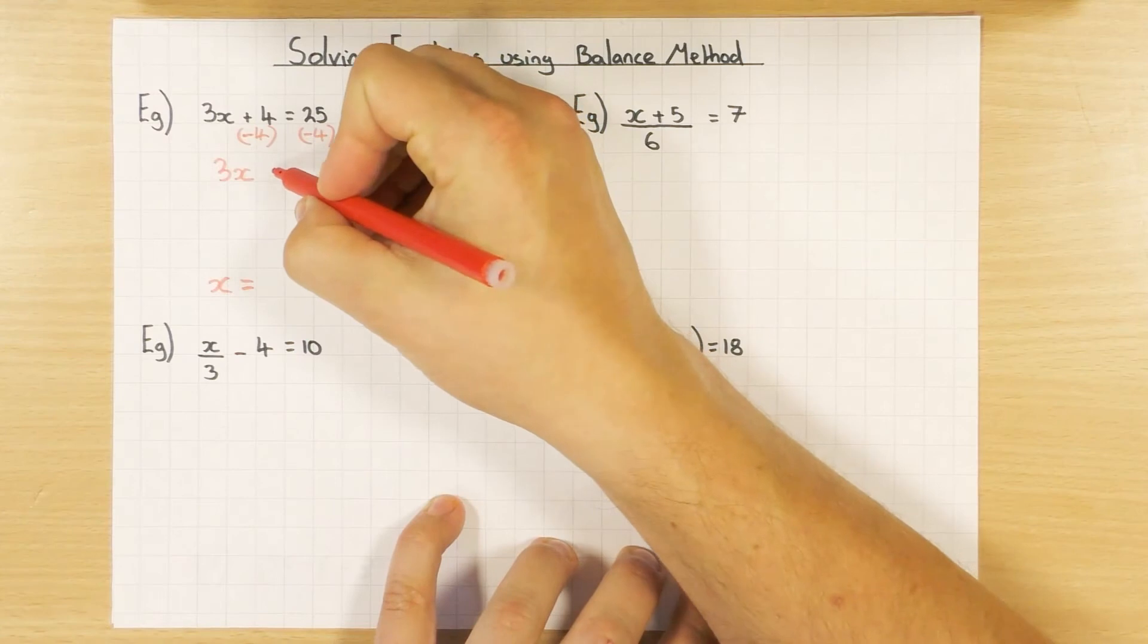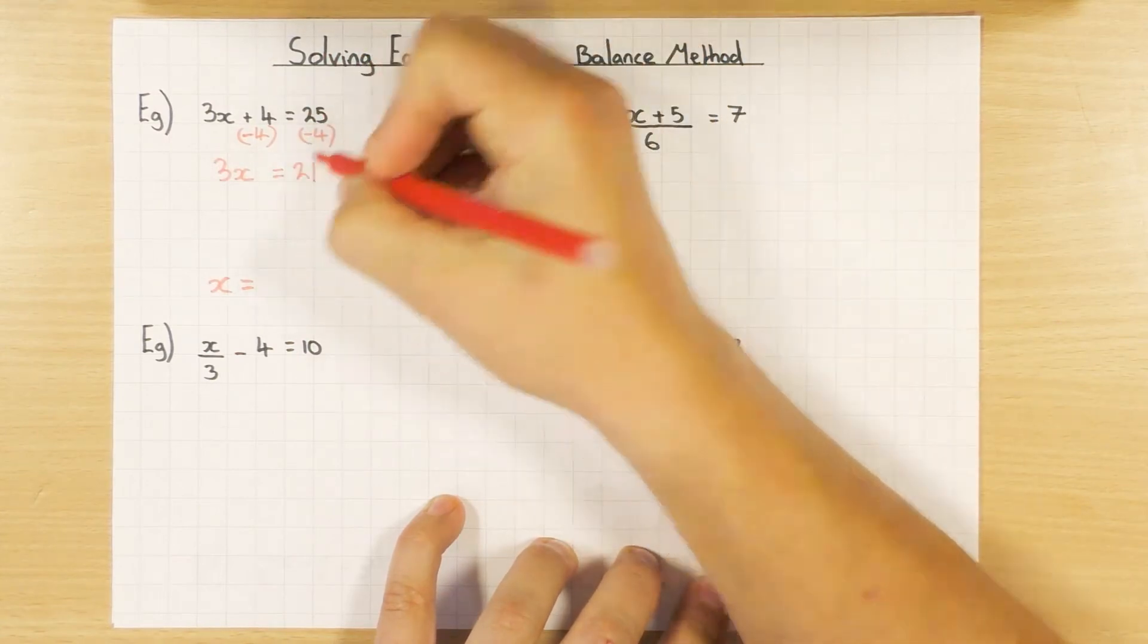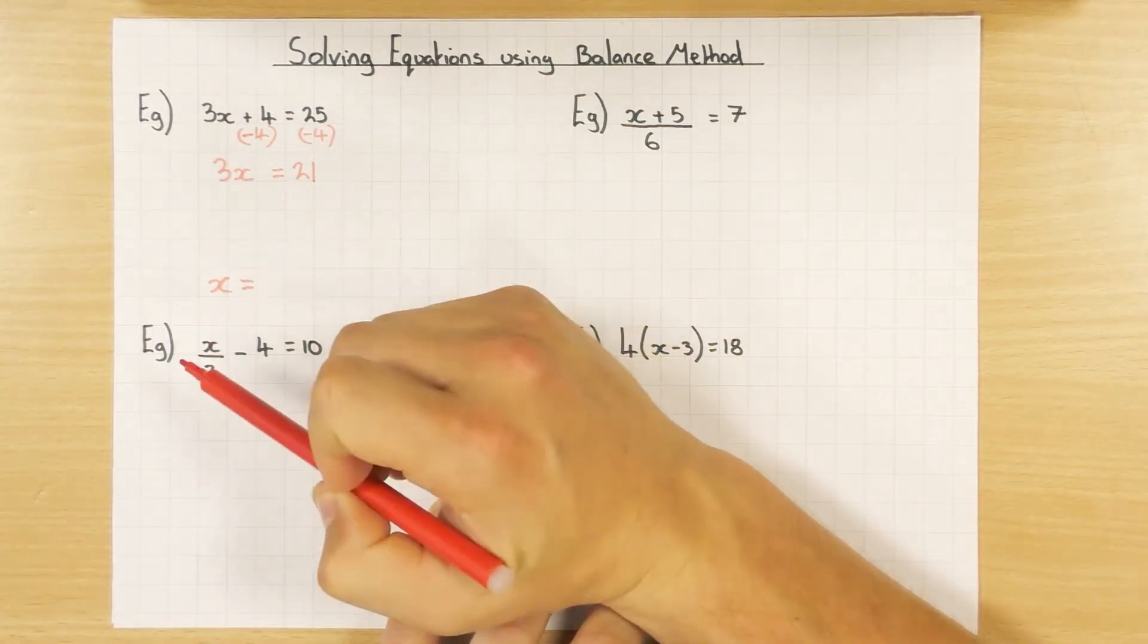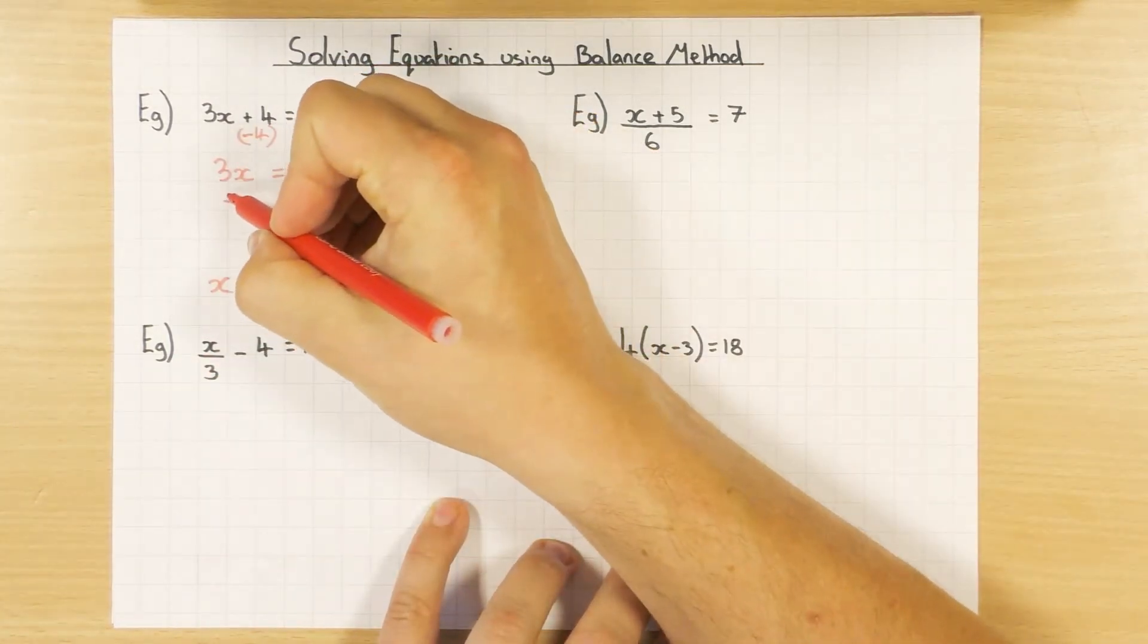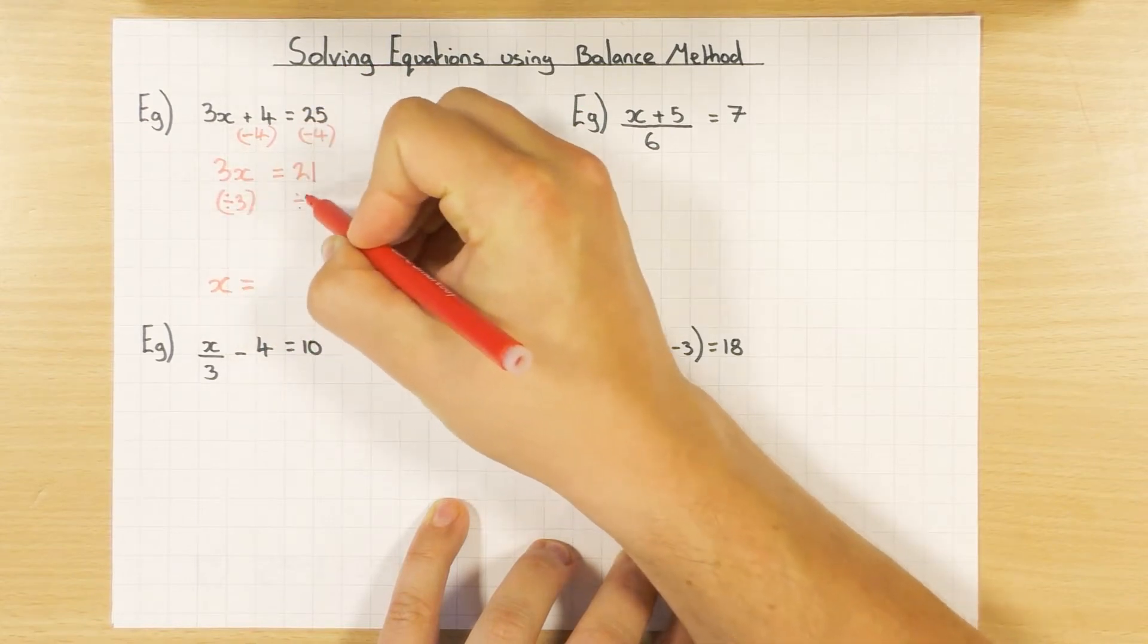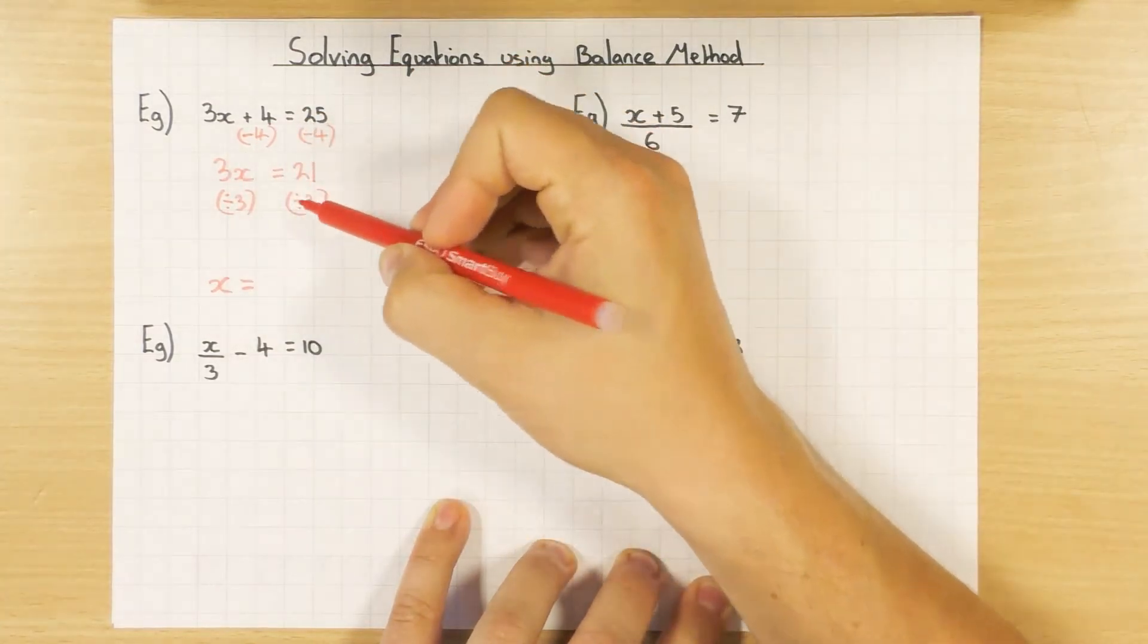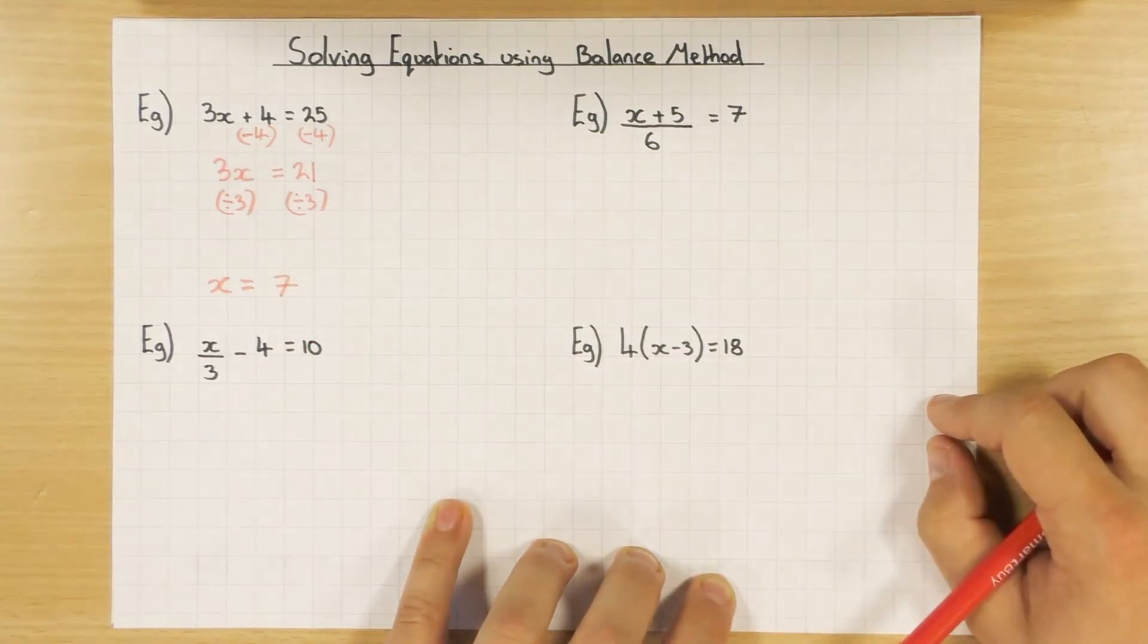So what am I left with? On the left-hand side, I'm just left with 3x, because obviously plus 4, take away 4, gets rid of it. That's why we do it. And on this side, 25 take away 4 obviously leaves me with 21. Now I'm just left with the 3x, and as I said a minute ago, 3x just means 3 times x. Again, I do the opposite. So I do the opposite, which is dividing by 3, and again, to both sides.